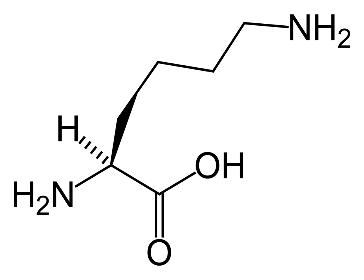Alpha-aminoadipic acid is an intermediate in the alpha-aminoadipic acid pathway for the metabolism of lysine and saccharopene. It is synthesized from homoisocitrate by aminoadipate aminotransferase and reduced by aminoadipate reductase to form the semialdehyde.